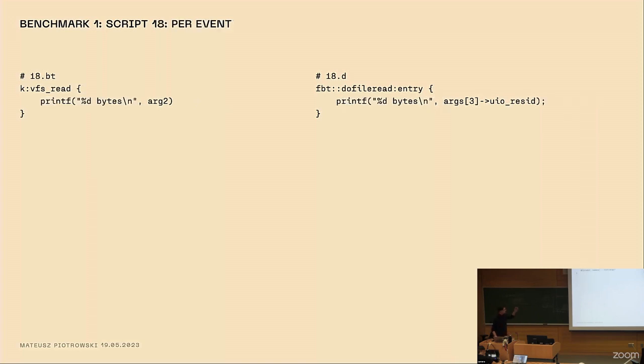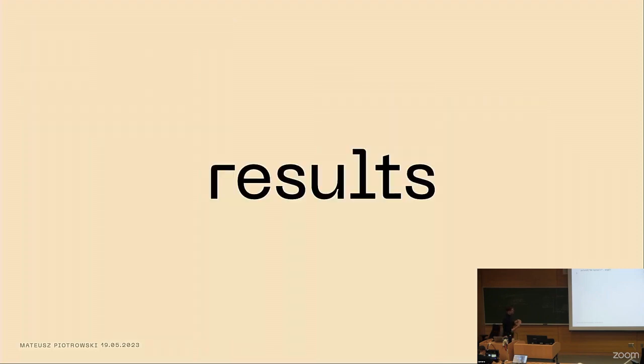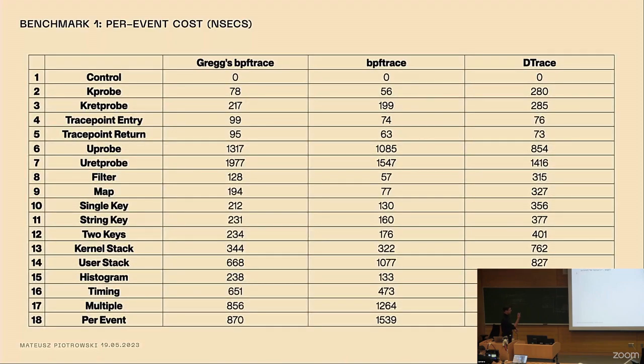And then some mix of many different features like kernel stack, user stack, two keys in the histogram. And finally, a per event split, which is just printing something whenever we fire a probe.